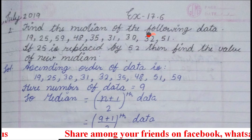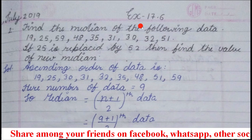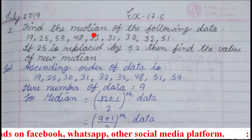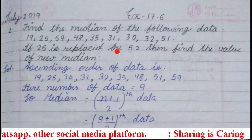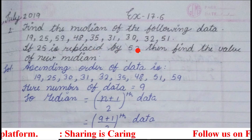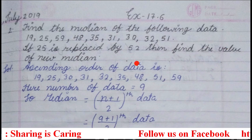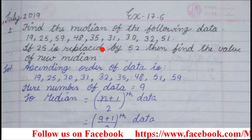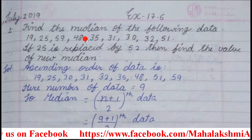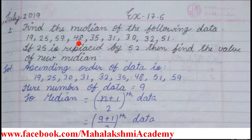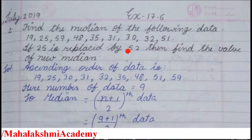The data are available and now we start finding the median. First we have to find out the median of these data. And then we have written that if 25 is replaced by 52, then find the value of the new median. So we have to do this question 2 times: first by assuming these are the data, and second time instead of 25, we will write 52 and do it again.